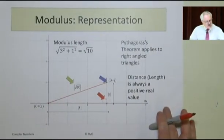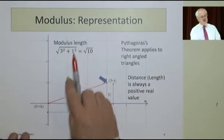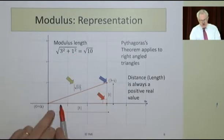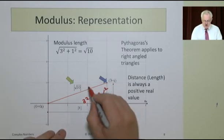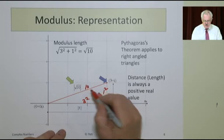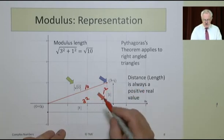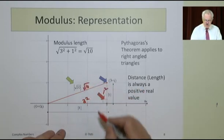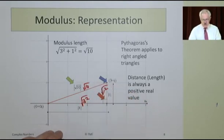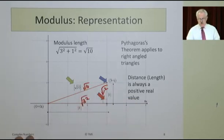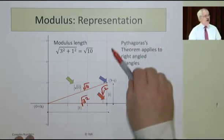As the modulus represents the distance of the complex number, its value is always positive. So if we look at that just briefly, we can see that we get the modulus length is 3 squared plus 1 squared. The 3, the 1, 3 squared, 1 squared, and then the square root of 10. So we get the 3 and that would give us the 10 in total. So 3 here, 1, and the square root of 10. And we're using Pythagoras' theorem.